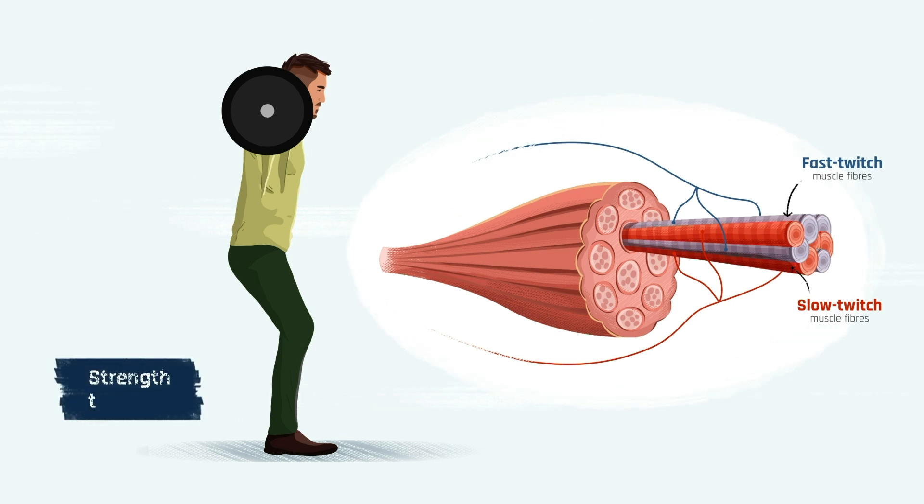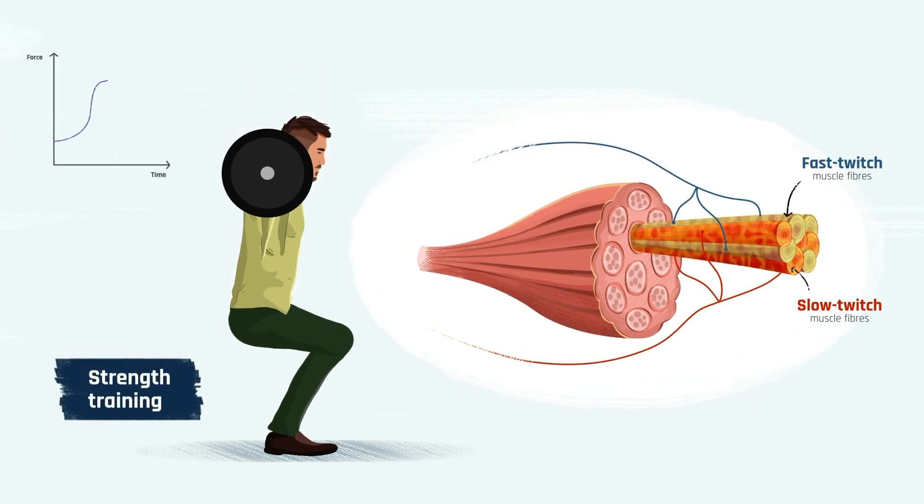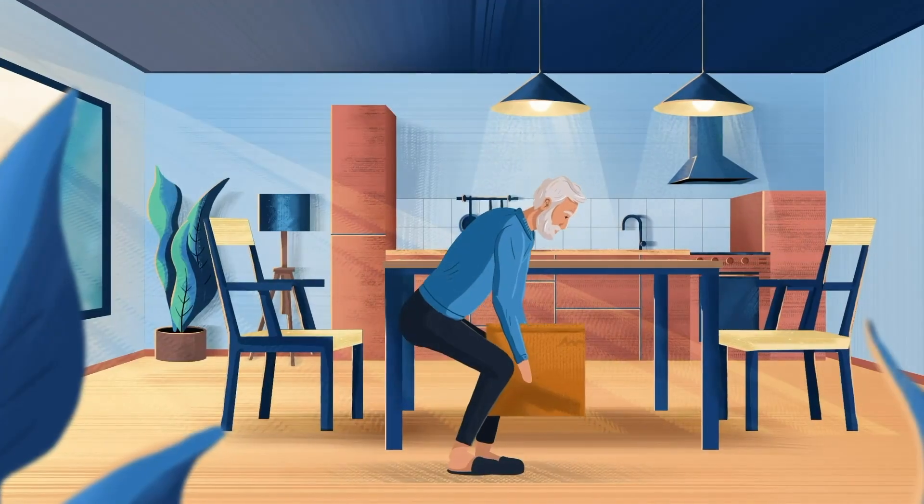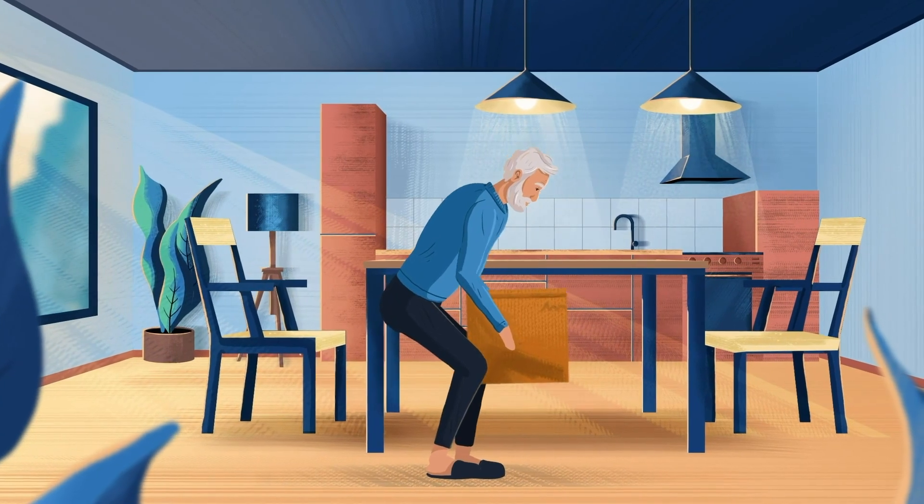The good news is that through strength training, we can keep both slow and fast twitch fibers active and make our muscles stronger at any age. Which means?